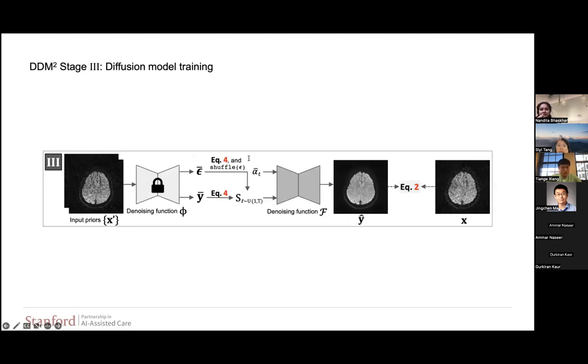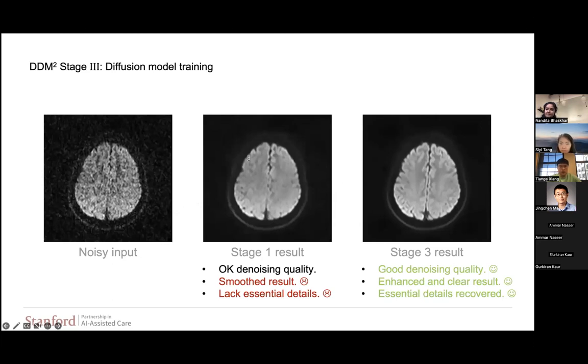After the previous two stages and in the last stage, we want to train this diffusion model by using another denoise network. And we have also proposed some practical tricks to better train diffusion model. But those tricks are actually very heavy in technical details. So maybe I should just skip. If you are interested, please see our paper for details. After all the three stages, our final results are much better compared to the stage one results and the input. The denoise quality is much better. Results are enhanced rather than over-smoothed. And essential anatomical details are recovered as well.